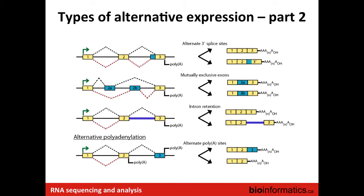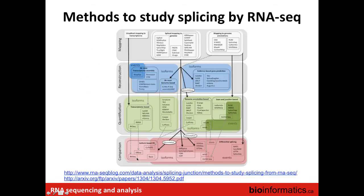The last alternative splicing category is intron retention, where the entire intron is retained and effectively becomes one large exon - instead of having exons 2 and 3, you just have a really large exon 2. Finally, just like you can have alternative transcript initiation at the beginning of the gene, you can have alternative polyadenylation that gives you different exons at the three-prime end of the gene, resulting in shorter or longer transcripts.